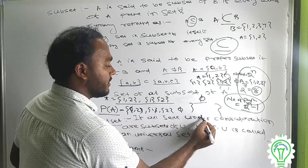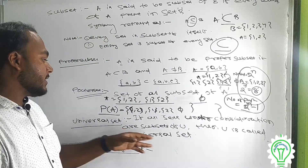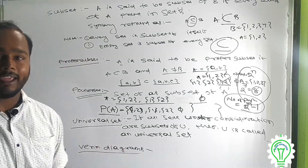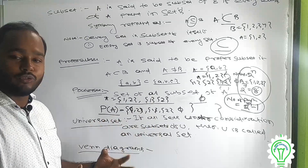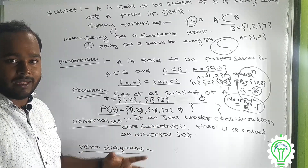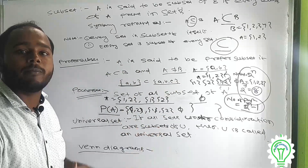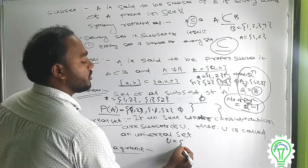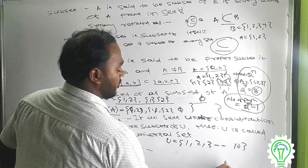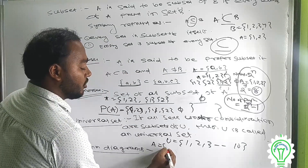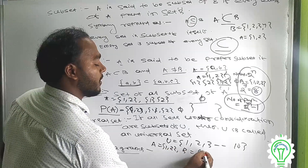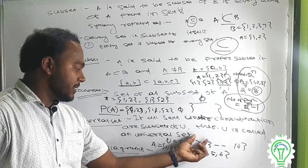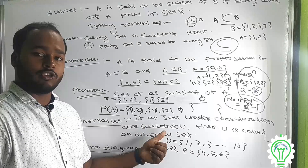If all sets under consideration are subsets of U, then U is called a universal set. Under consideration, if all sets are subset of U, then U is the universal set.